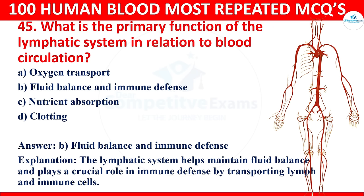Question 48: Which blood component is responsible for carrying oxygen and carbon dioxide in the bloodstream? Options: red blood cells, white blood cells, platelets, or plasma. The correct answer is red blood cells. Red blood cells carry oxygen from the lungs to the tissues and transport carbon dioxide from the tissues to the lungs for exhalation.